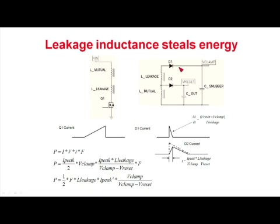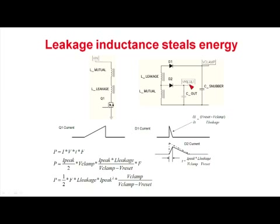D1 will discharge the leakage inductance and D2 will eventually discharge the magnetizing inductance. But what happens when it first turns on, there's a fixed amount of current in these inductors and that current can't change instantaneously. So that means the whole magnetizing inductance current is flowing through this path. And so you'll develop a voltage across that inductance that's set by the difference between the reset voltage and the clamp voltage. And that's what discharges the leakage inductance.